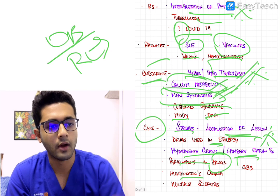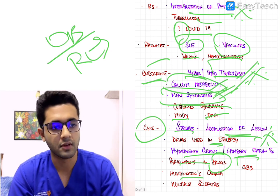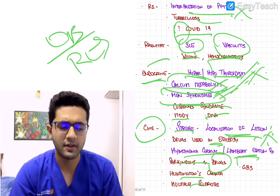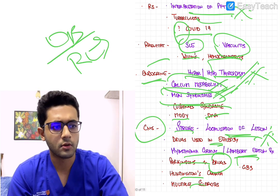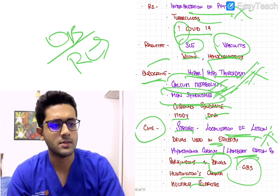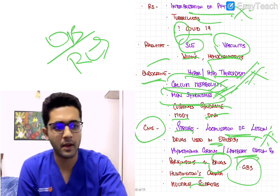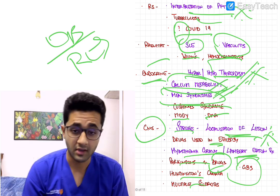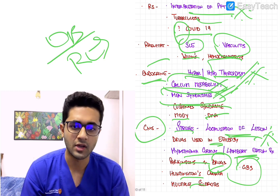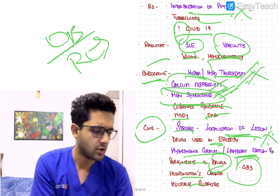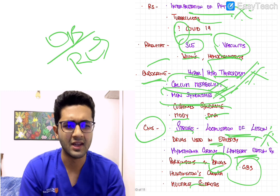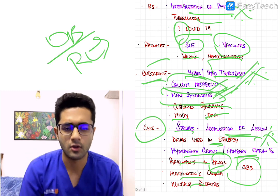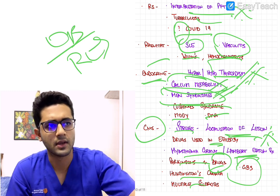Huntington's chorea is important and frequently asked, especially the genetic aspect of it. Multiple sclerosis has been asked more in recent needs, and GBS — Guillain-Barré syndrome — as well. For Parkinson's, remember the drugs used and the neurotransmitters involved, particularly the relation between prolactin and dopamine, which is something that is frequently asked.